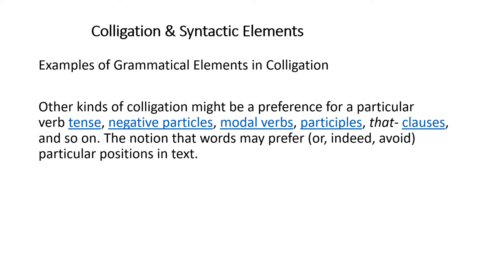Modal verbs or auxiliary verbs — helping verbs such as 'will,' 'shall,' 'has,' 'have,' 'had,' 'is,' 'am,' 'are,' 'was,' 'were.' Also called participles — a participle is a word made from a verb and used as an adjective, like 'working women' or 'sleeping dogs' or 'burnt toast.' These are participles: made from a verb but used as adjectives.